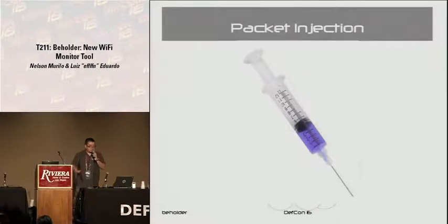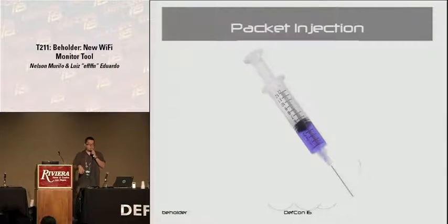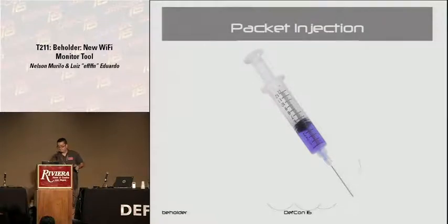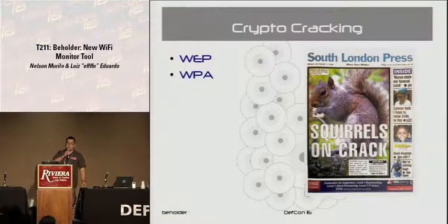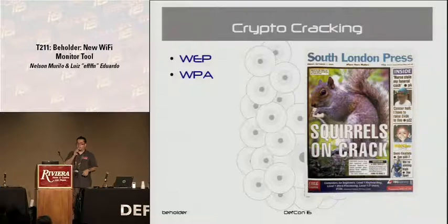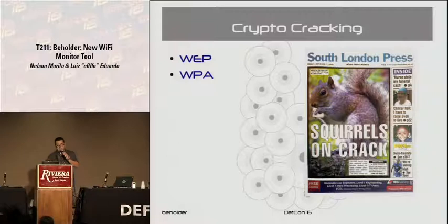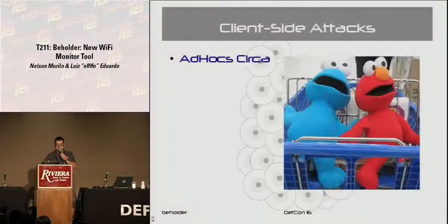Packet injection is most likely used in combination with the other attacks. When you do man-in-the-middle, you first have to de-auth the valid user to connect to you, or you do packet injection to simply break the network — send de-auth packets to everybody. Crypto cracking: WEP has been broken forever, that's why they created WPA. Then Josh and some other guys came and broke WPA. WPA in theory is still kind of secure but not totally — go look it up on the internet.